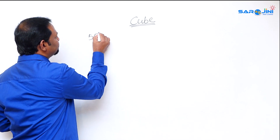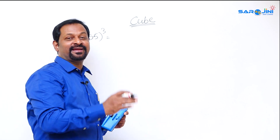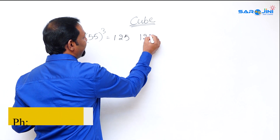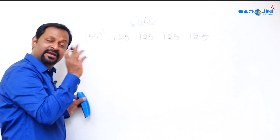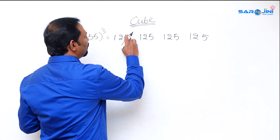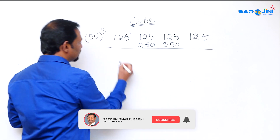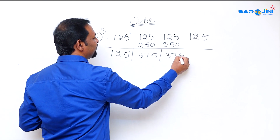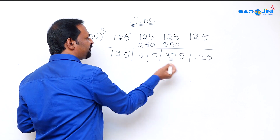Now take 55 cube. 5 cube is 5 × 5 × 5 = 125. Write 125 four times: 125, 125, 125, 125. The first and last positions remain 125. Double the two middle terms: 125 doubled is 250. So the row is: 125, 375, 375, 125. How I got 375: 100 + 200 = 300, 20 + 50 = 70, 5 + 0 = 5, giving 375.